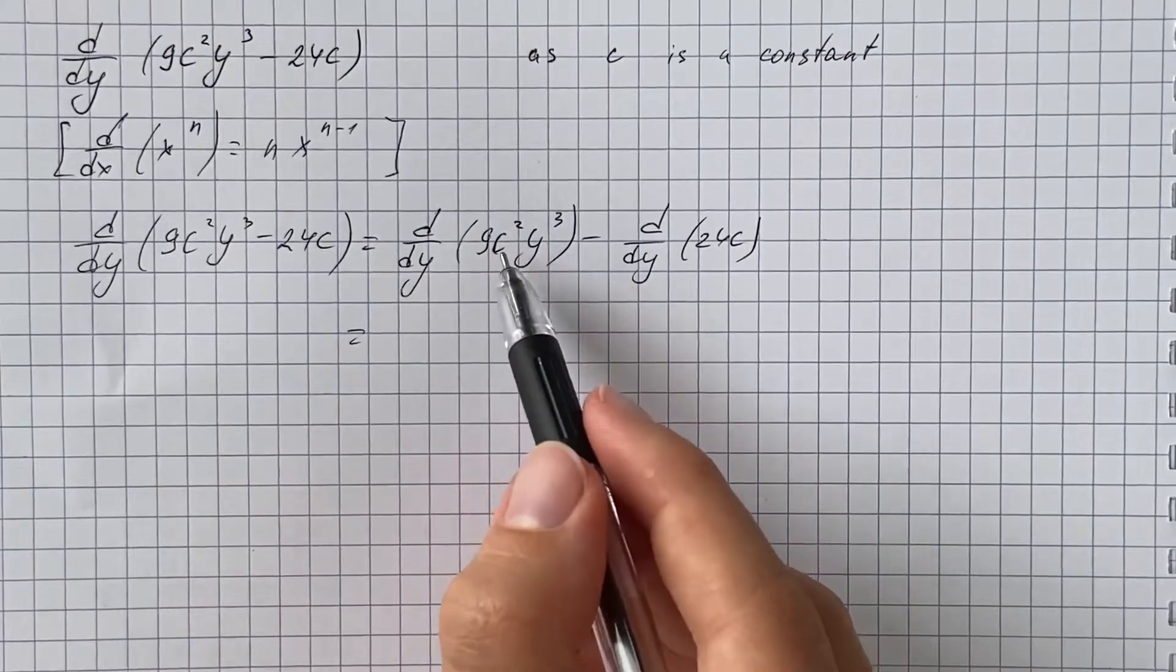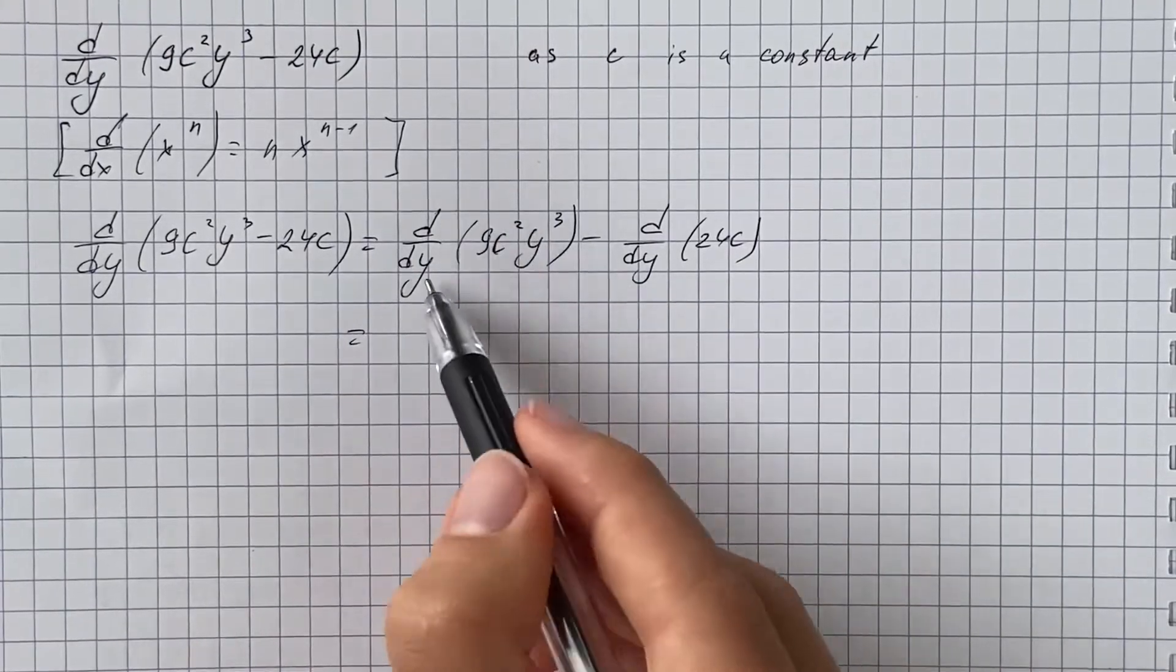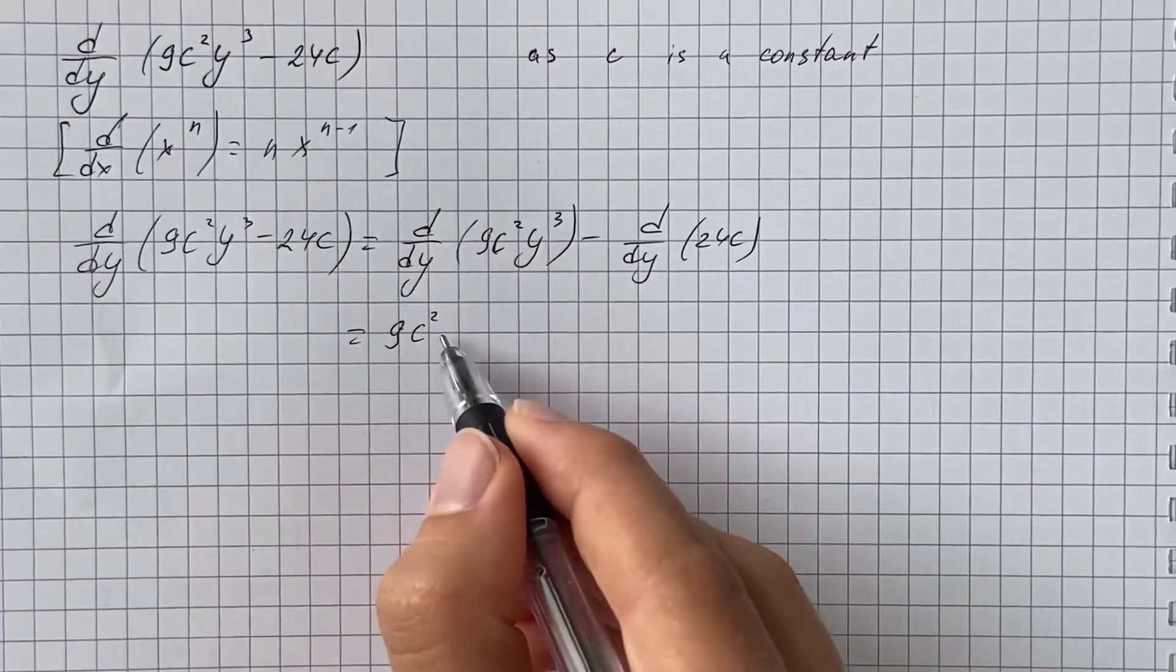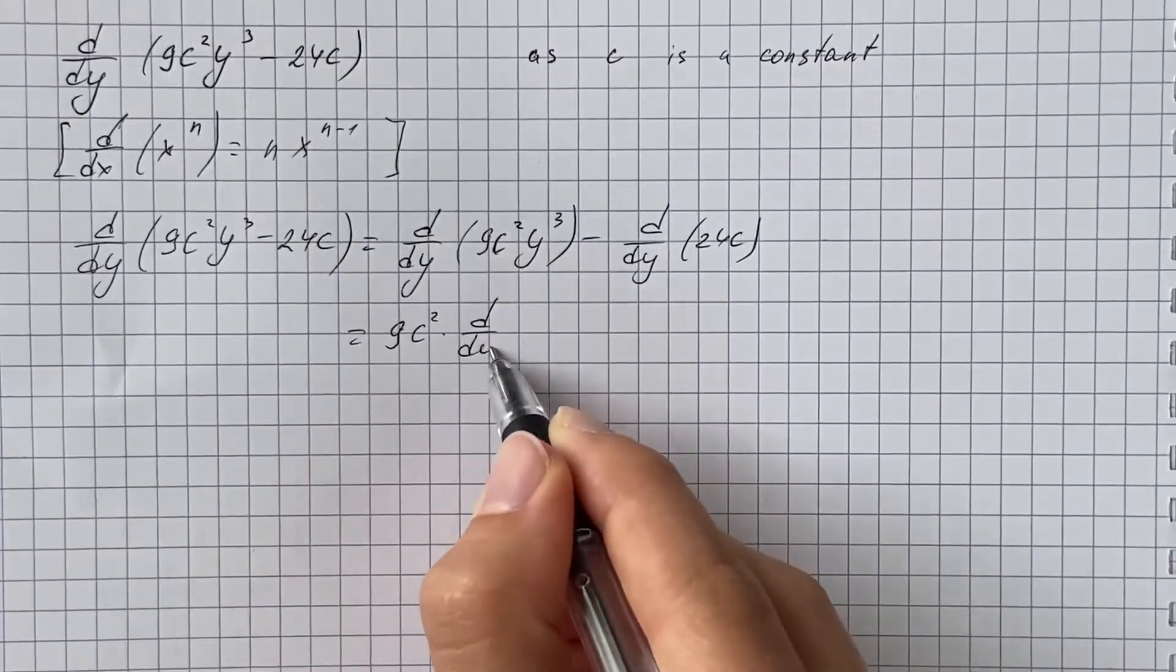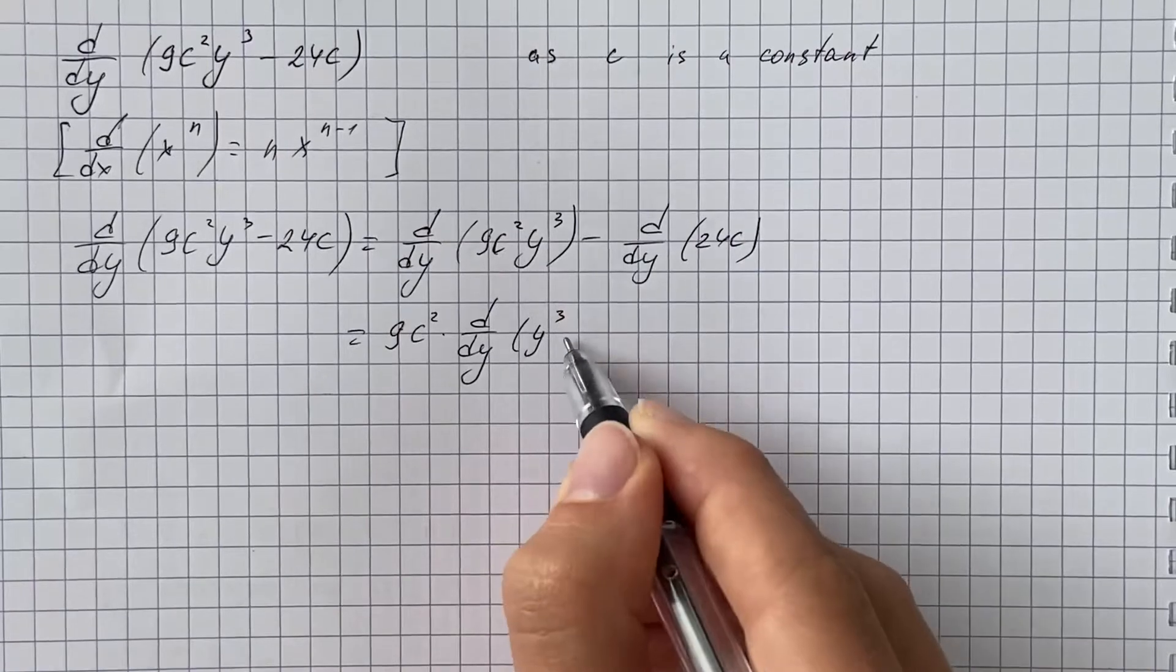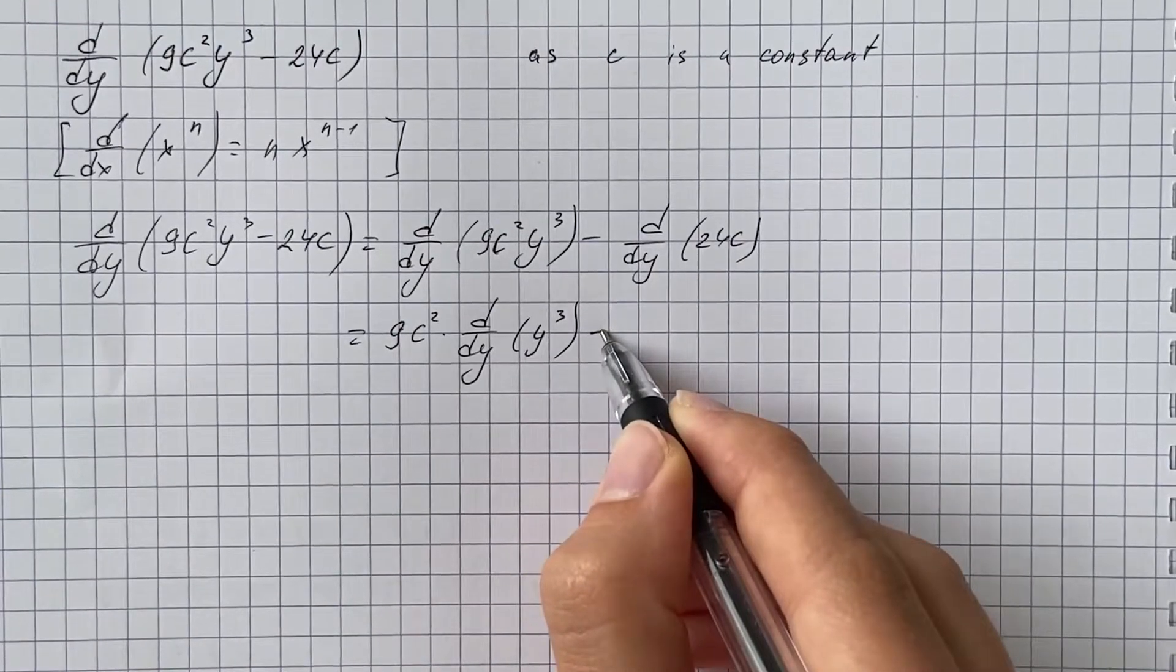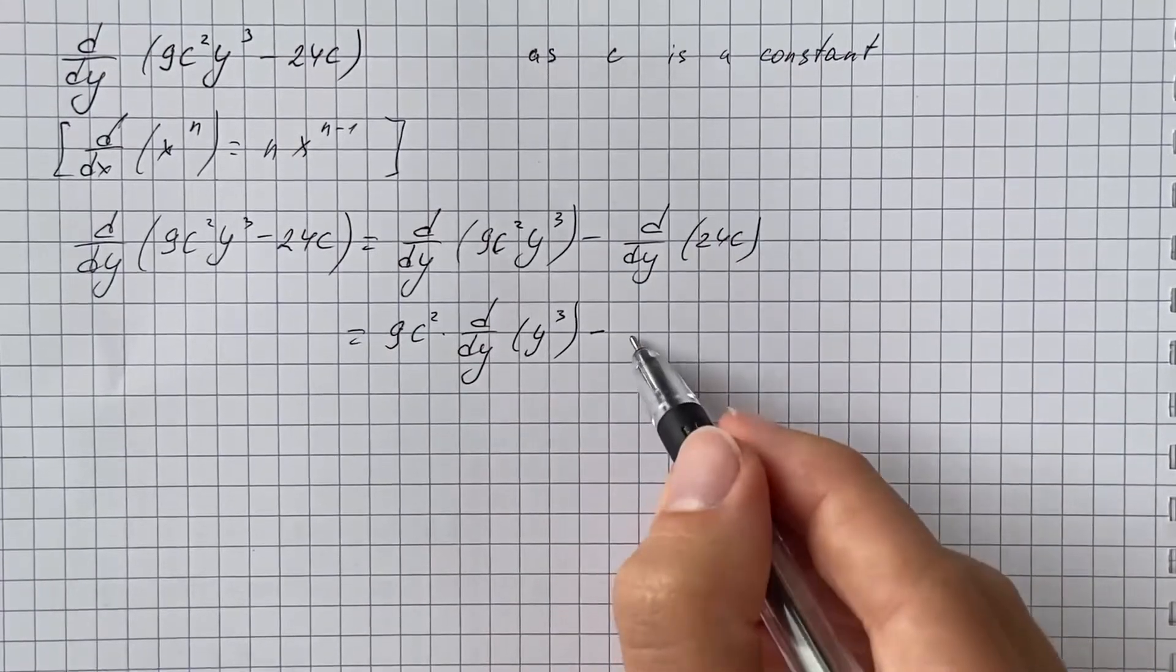So at first we take constant out of the derivative and that's gonna be 9c squared times derivative of y cubed, and derivative of constant equals 0.